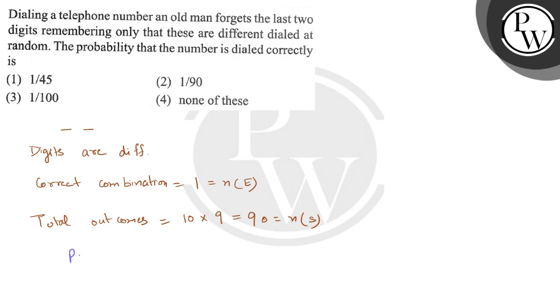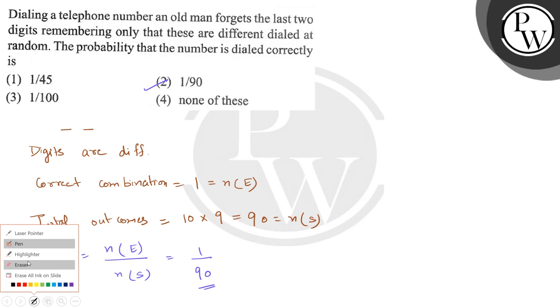We get the answer as 1 by 90, which is option number 2. So option 2 is the correct one. I hope you understood it, best of luck!